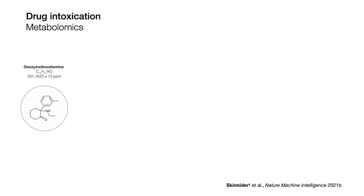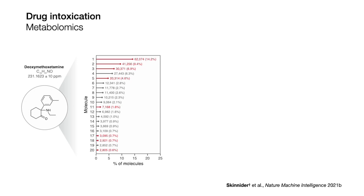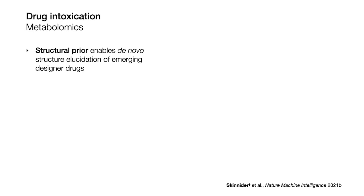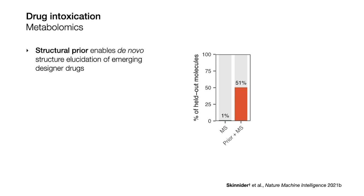We tested this idea on a new designer drug that the Danish National Forensic Lab had just discovered — a new derivative of the street drug PCP called deoxymethoxetamine. We asked: if all we knew about this compound was its exact mass, would our model have guessed the right structure? Sure enough, out of about 18,000 generated molecules matching this exact mass, the single most frequently sampled molecule was deoxymethoxetamine itself. When we combined the structural prior with mass spectrometry data, we could do de novo structure elucidation of new designer drugs with unprecedented accuracy. On a set of 79 designer drugs discovered after we finalized our model, we could get the structure exactly right for 51% of them, compared to just 1% with mass spectrometry alone.